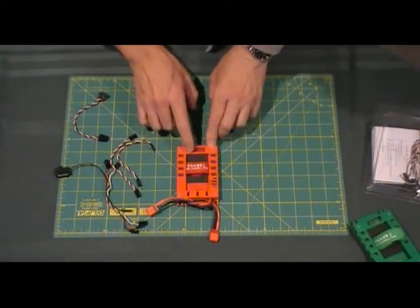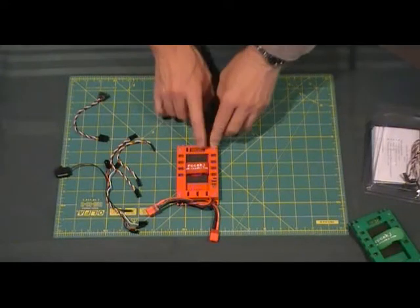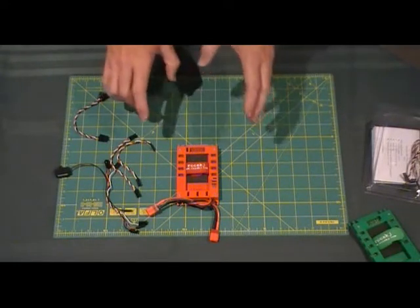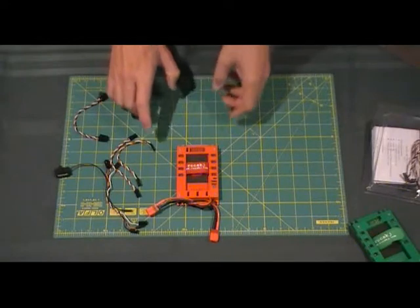Again you have the eight outputs, but there's an extra one on the side there and that's used for your CDI ignition, so you can actually run your CDI and cut your CDI off this unit here.